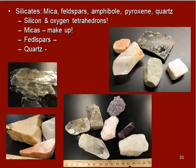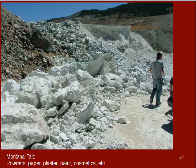The way these silicon tetrahedrons are arranged together produces the cleavage that we see in the first four silicate minerals. In quartz, a framework silicate, the arrangement means there is no cleavage — the mineral just shatters if you break it. One common silicate is talc, which is used for powders, paper, plaster, paint, and some cosmetics. So silicates have a lot of different uses.